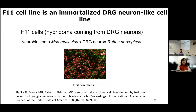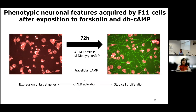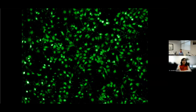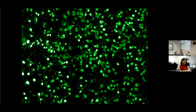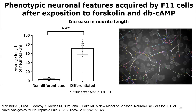We set up a differentiation protocol after studying the published protocols in the literature. We chose forskolin and dibutyryl cyclic AMP as differentiation factors. Both substances increase intracellular cyclic AMP, leading to an activation of the CREB transcription factor. This produces the expression of target genes and a stop in cell proliferation. We can see in this time-lapse video the 72-hour differentiation process of F11 cells and the acquisition of phenotypic features of dorsal root ganglia sensory neurons.